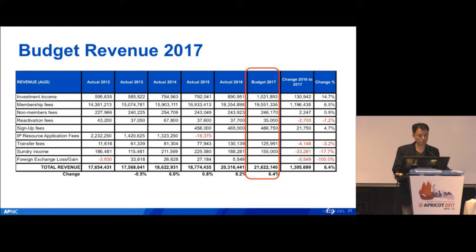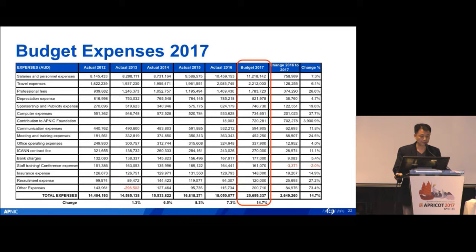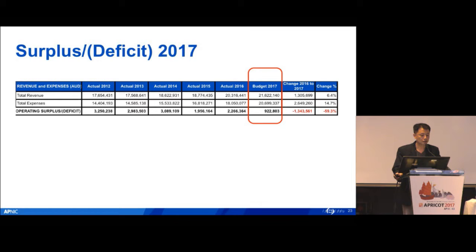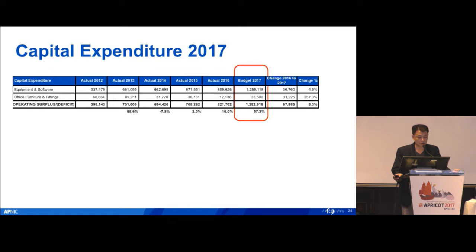The budget revenue for 2017 is $21.6 million — that's 6.4% higher than last year. The budget expense for 2017 has a variation less than 59% compared to last year. Capital expenditure this year, 2017, is $1.292 million.